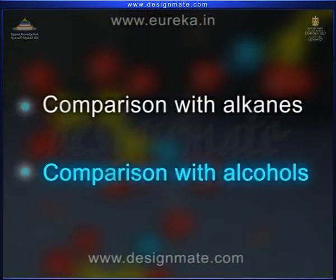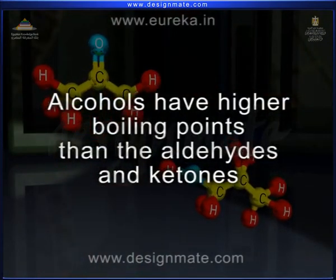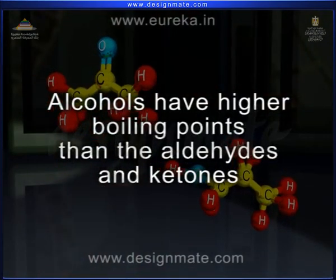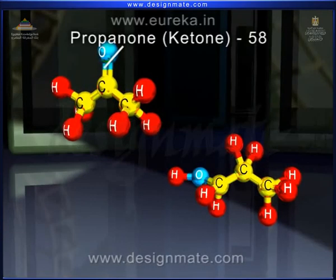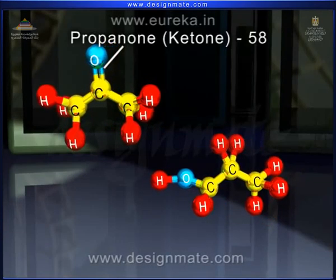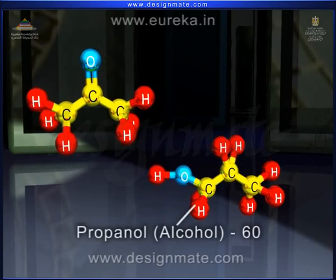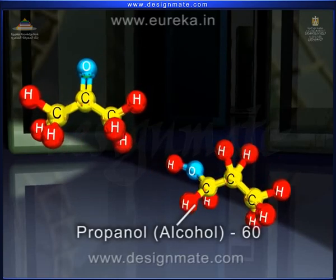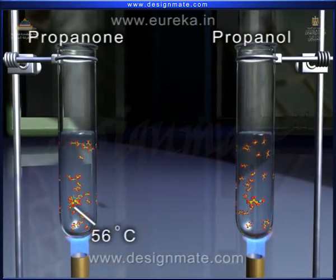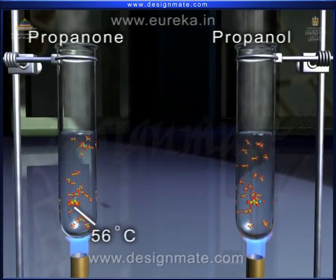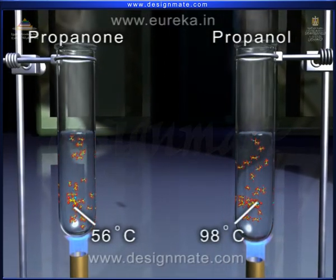Comparison with Alcohols. Alcohols have higher boiling points than the aldehydes and ketones of comparable molecular weights. For example, the molecular weight of propanone is 58 and for propanol it is 60. But the boiling point of propanone is 56 degrees centigrade, while that of propanol is 98 degrees centigrade.